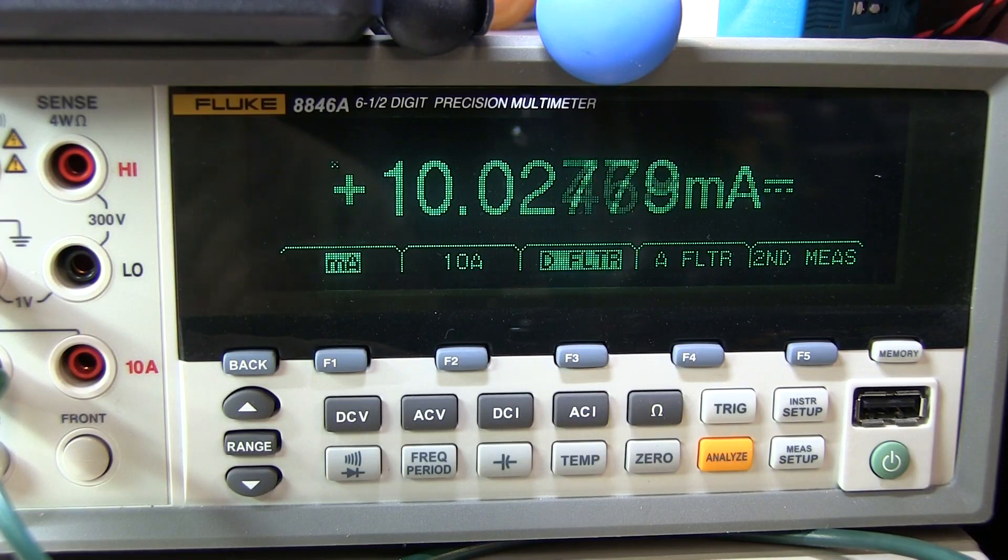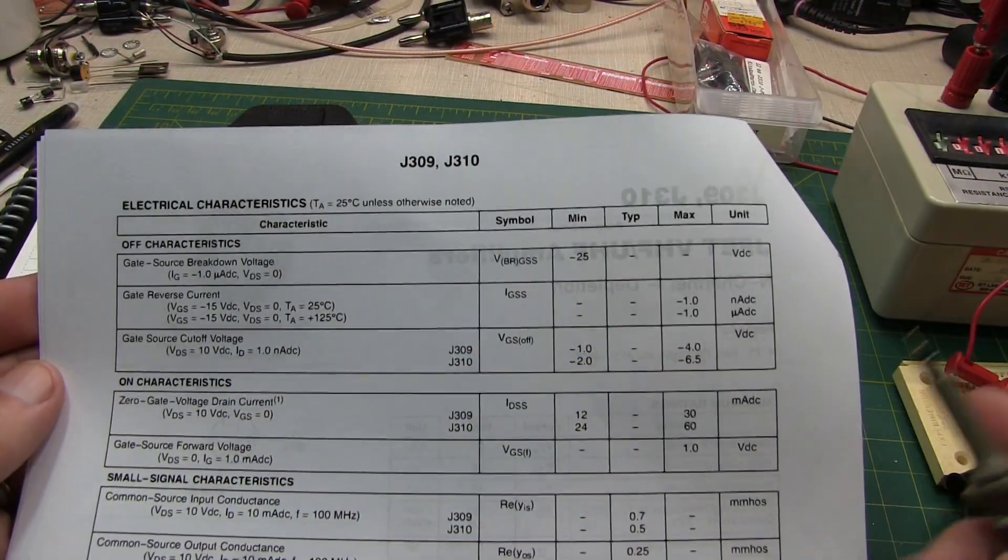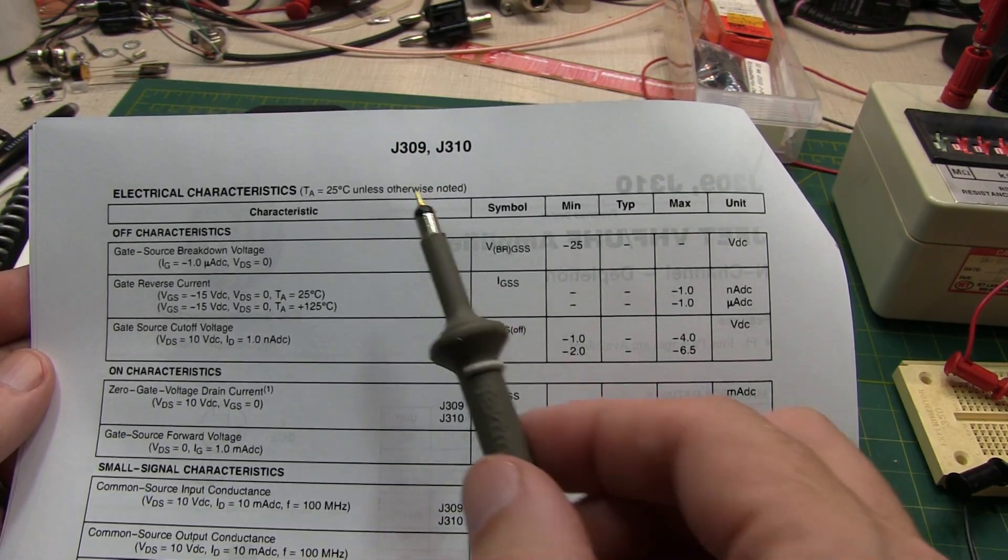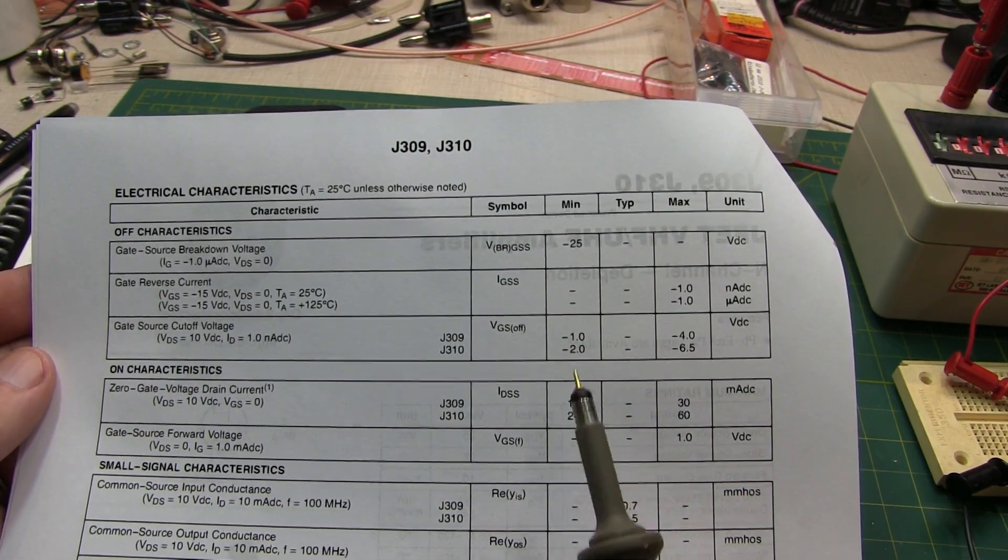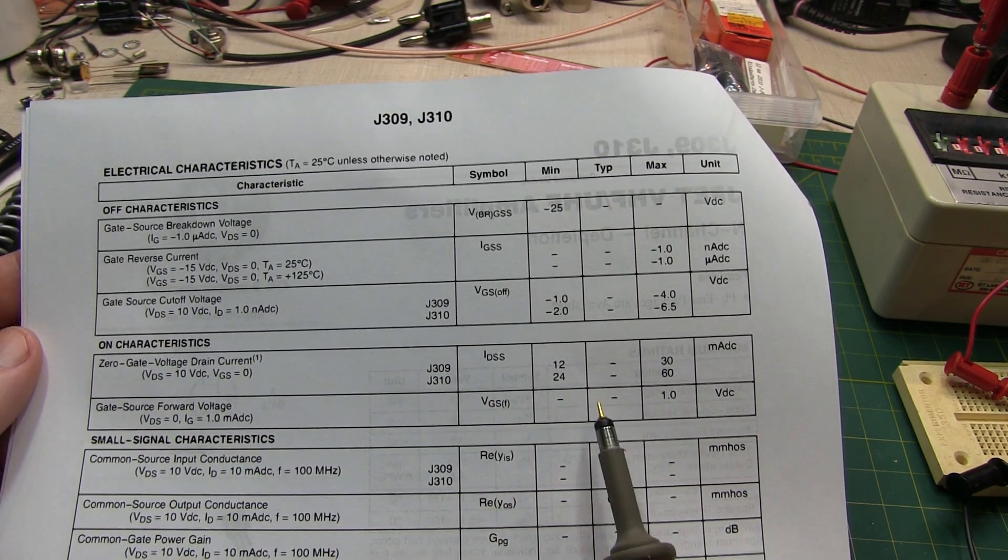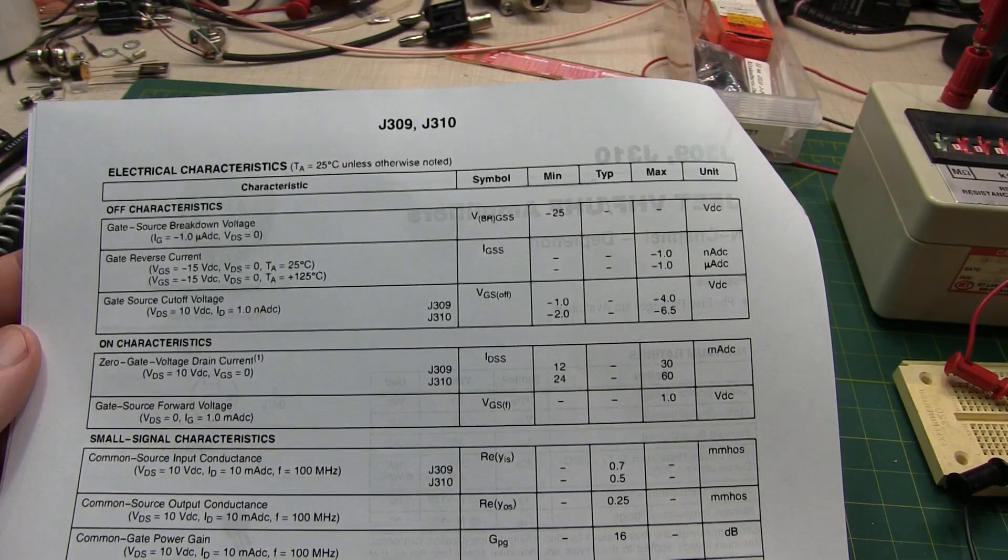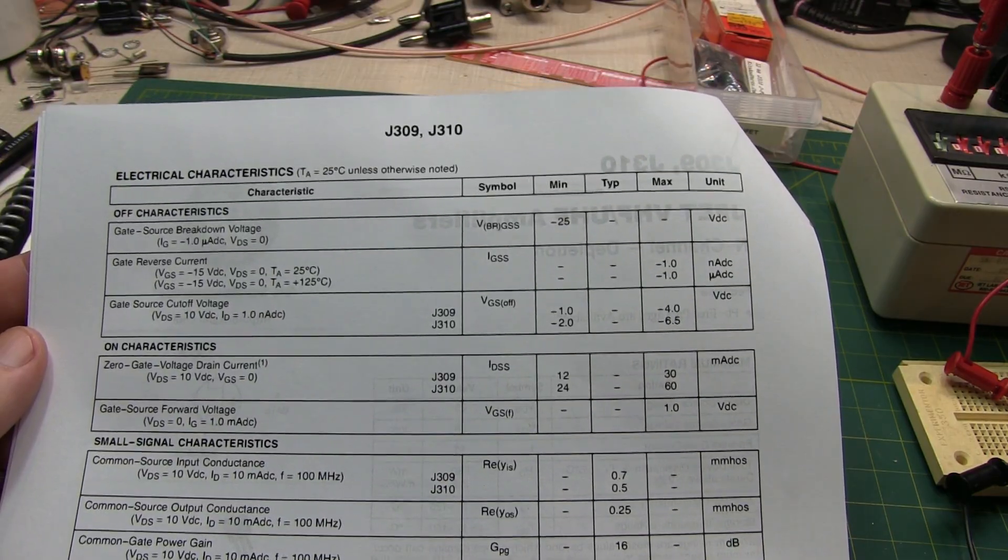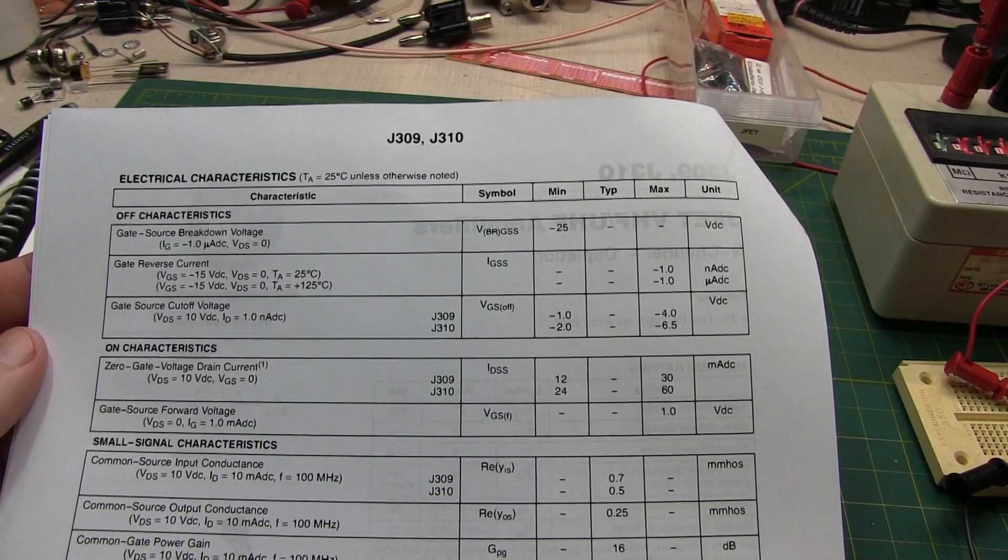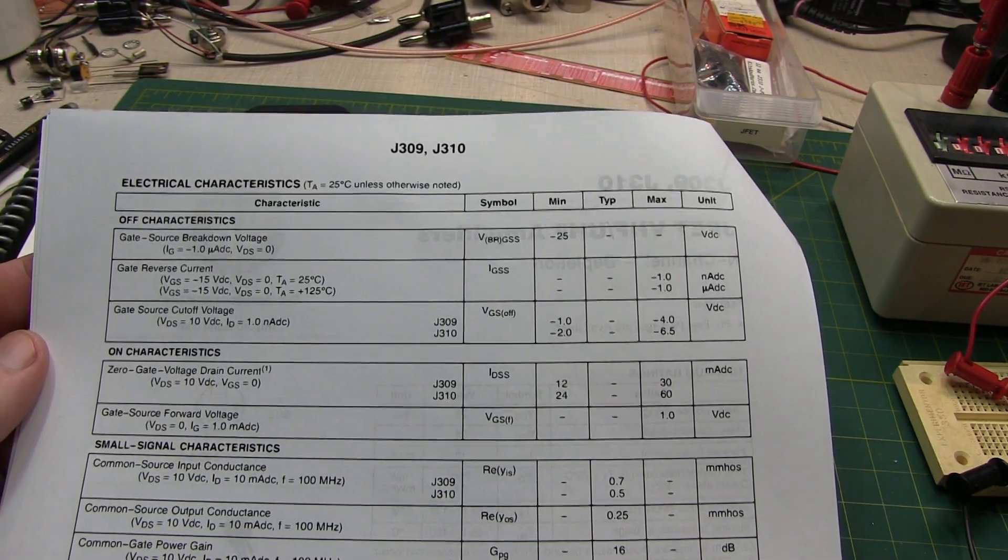Again, nice experiment for you to play along at home with. As we saw from the datasheet, there can be a lot of variation for a given part number and different given device for things like IDSS and the gate to source cutoff voltage and things like that. So your mileage will certainly vary when you start playing with your own JFETs in these same circuits, but the overall behavior should be about the same.